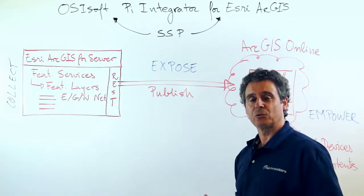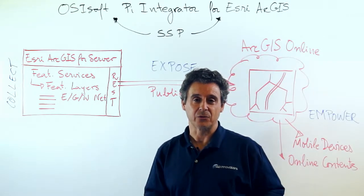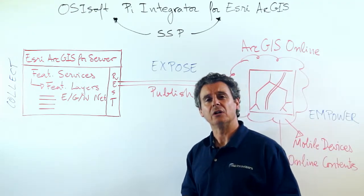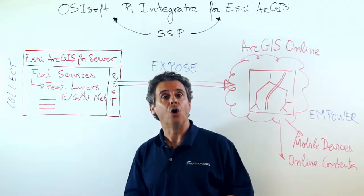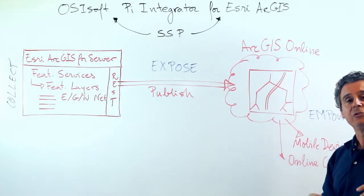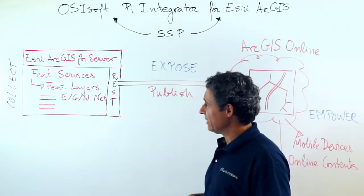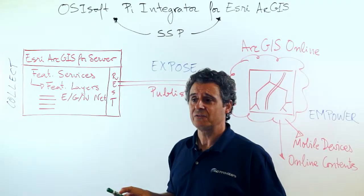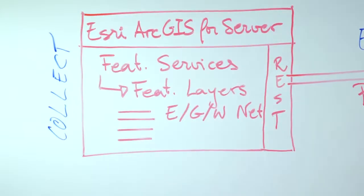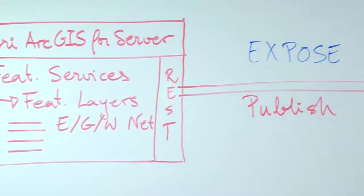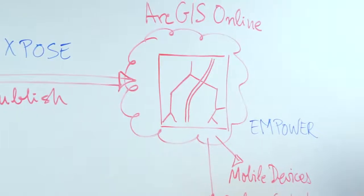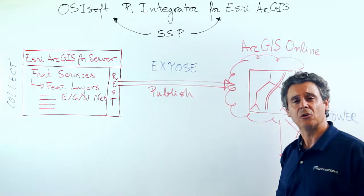If you are familiar with ESRI's GIS Online efforts in the last few years, and maybe your utility has already implemented online mapping, you know that the model of collect, expose, and empower is being performed and implemented through creating feature services and feature layers, exposing them through a REST endpoint, publishing them to the online cloud, and then consuming them through mobile devices or any other mechanism for online content.